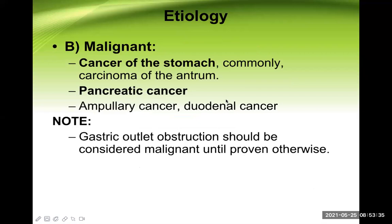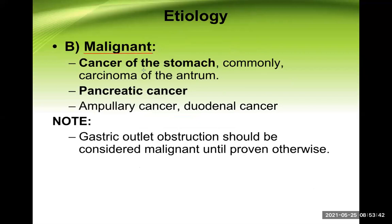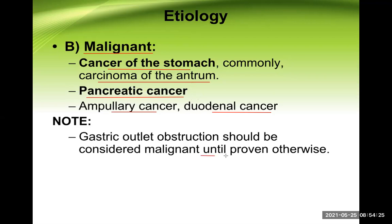The malignant causes include carcinoma of the stomach, which is the most common malignant cause. Carcinoma of the stomach, if it occurs in the antral area — the pyloric region — may cause obstruction there. Some rarer causes are pancreatic cancer, ampullary cancer, and duodenal cancer, which are not very common but can be mentioned because they are near the pyloric sphincter. Gastric outlet obstruction should be considered malignant until proven otherwise.